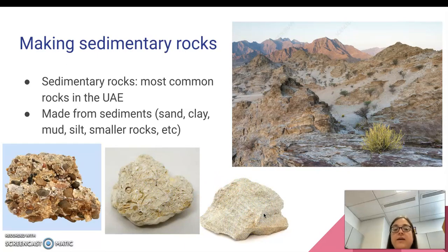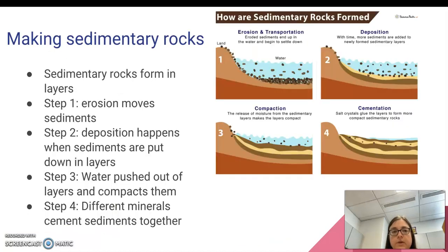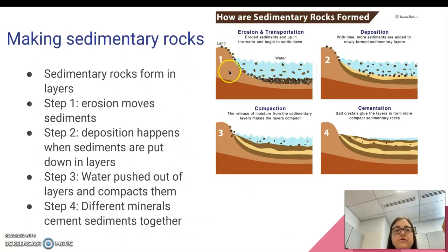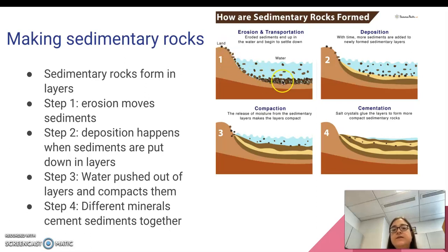Sedimentary rocks are made out of sediments. Making the rocks is a process with four main steps. First, you have erosion. Erosion moves the sediments, and as you can see in this example, it deposits them at the bottom of a body of water, which is usually what happens.